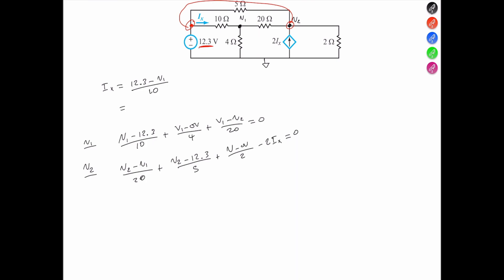Solution of the three equations. You could substitute Ix, and then solve for, so you would have 24.6 minus 2V1 divided by 10, or you could just divide the 10 by 2.